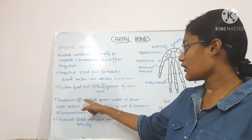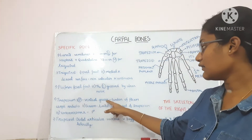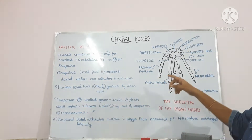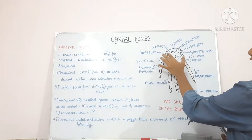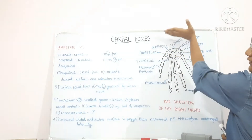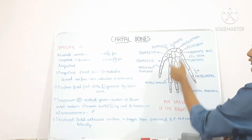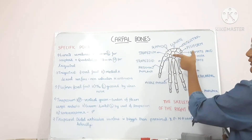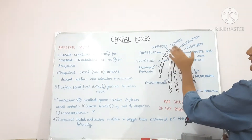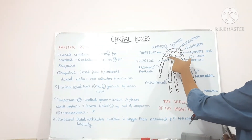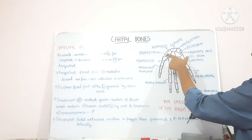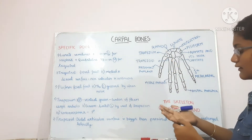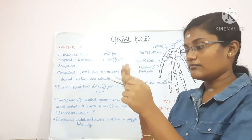The trapezium bone on its proximal aspect has a vertical groove which gives attachment to the tendon of the flexor carpi radialis. On the proximal aspect it has a groove for the tendon of the flexor carpi radialis, and this groove is limited by the crest of the trapezium. The trapezium also has a saddle surface which is concave or convex and provides attachment to the first metacarpal bone.